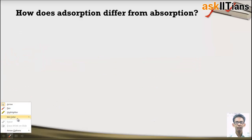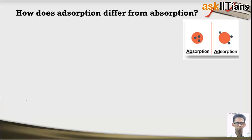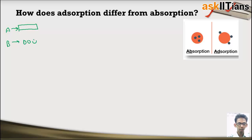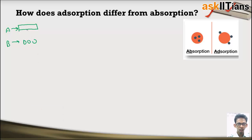Next: how does adsorption differ from absorption? There is an image here where you can see both processes. To understand the difference, consider substances A and B again. The first case is when the molecules of B are present only on the surface and not in the bulk — this is known as adsorption.